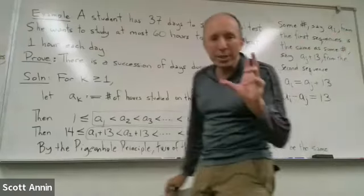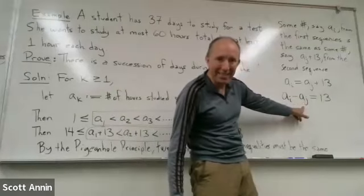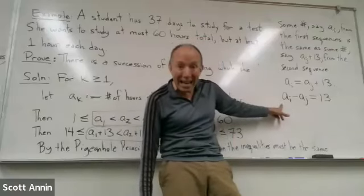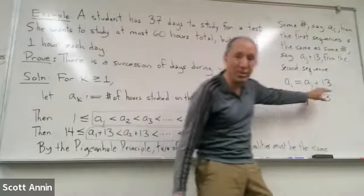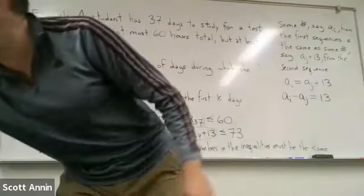In other words, the difference between how many hours this student has studied on the first j days compared with how many hours she studied on the first i days. That difference is 13, which means that between the i and j days.